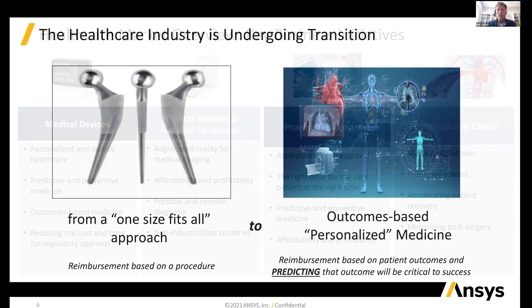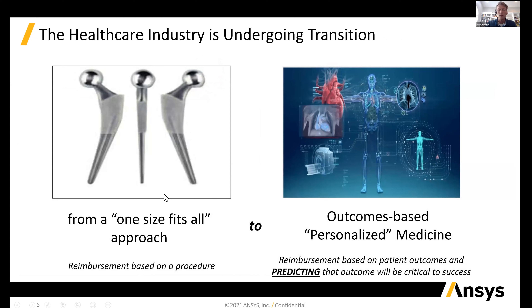A few themes bubble out from the key business initiatives in healthcare. One is profitability — using modeling and simulation to drive innovation faster, cheaper, or improve R&D productivity. We can also make a better product and differentiate ourselves for more market share. The second theme is accelerating regulatory approval through modeling and simulation. The third is personalized medicine — transitioning from a one-size-fits-all approach to outcomes-based or personalized medicine.